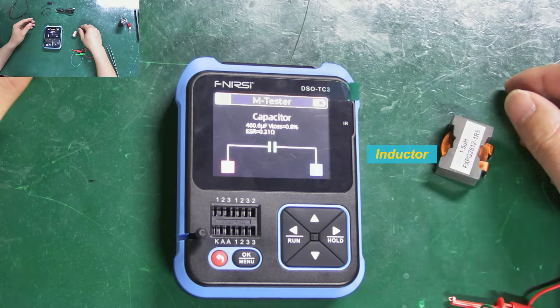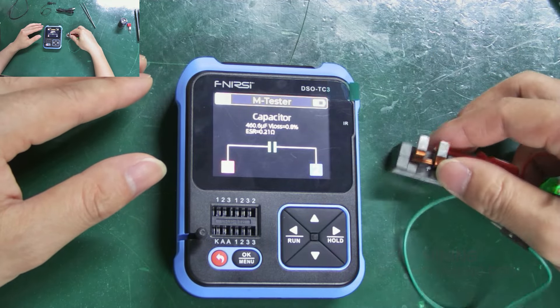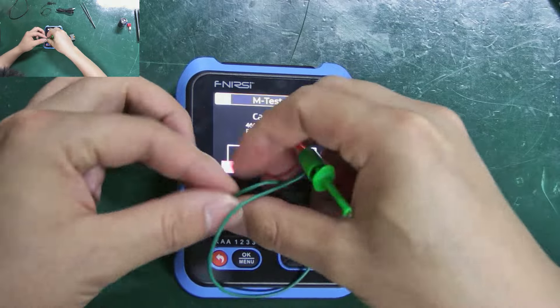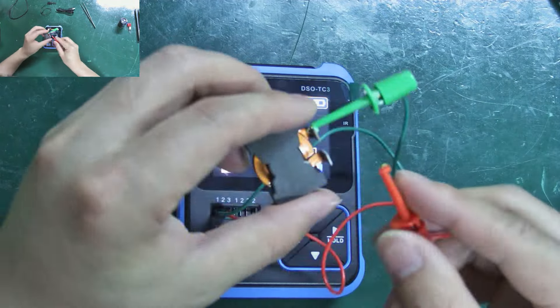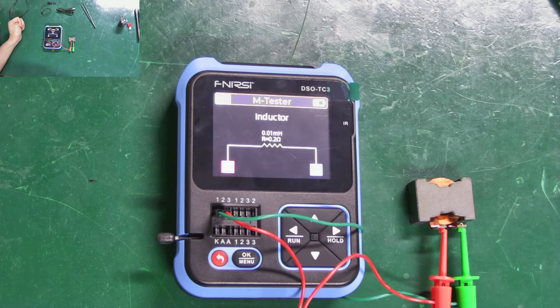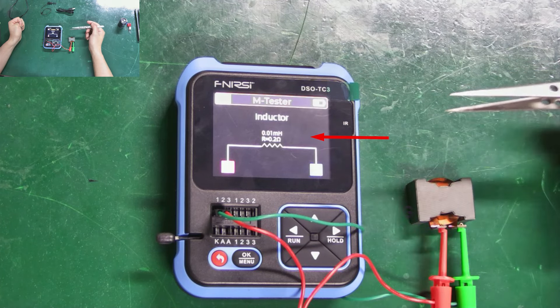Next let's measure an inductor. Since its pins are too large, we will use the test hooks again. The screen also displays the related data for the inductor.